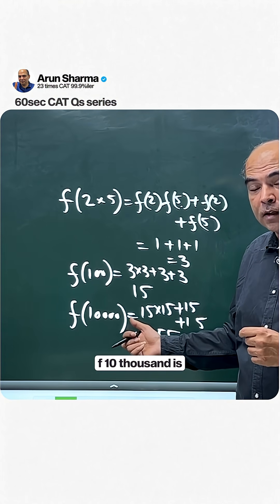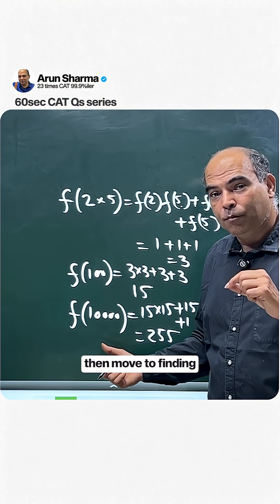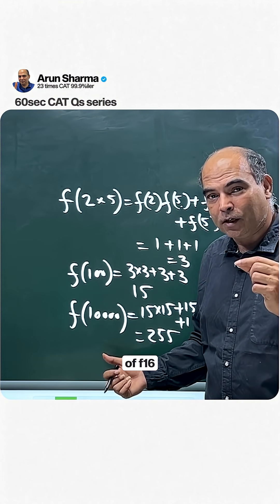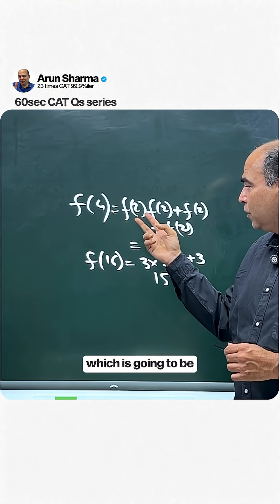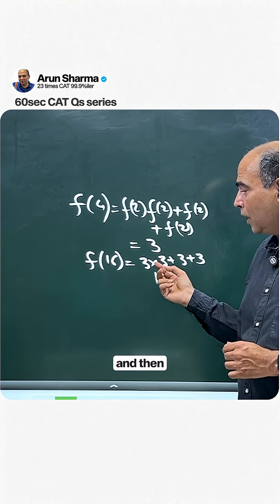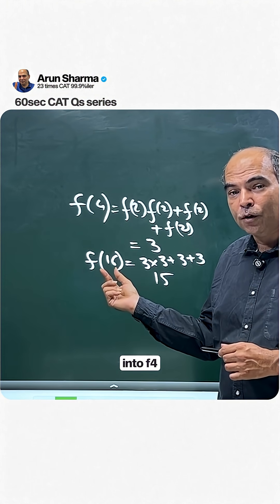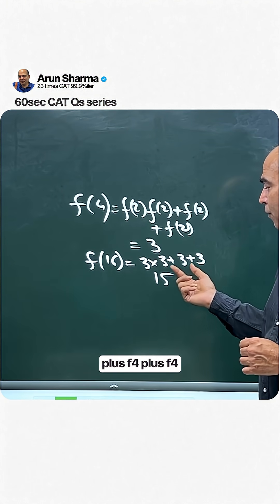Now find f(16). First calculate f(4) using f(2,2): f(4) = 1 + 1 + 1 = 3. Then f(16) using f(4,4): f(16) = 3 × 3 + 3 + 3 = 15.